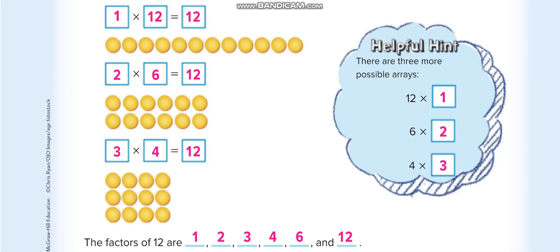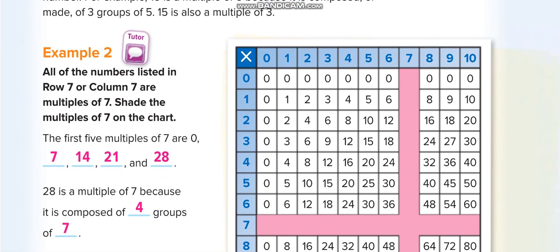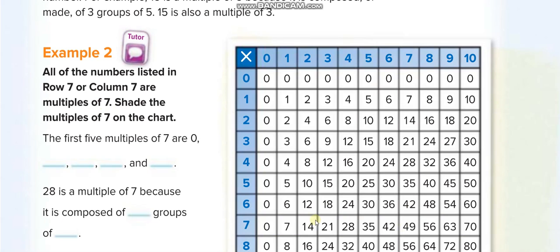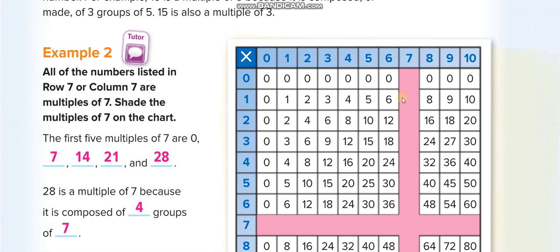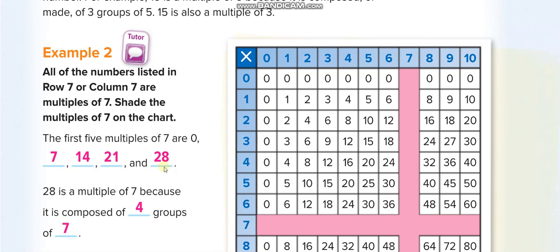Now the second topic: multiples. Multiples are very simple — they start with 0, like the multiplication table of that number. For multiples of 7: starting with 0, then 7, 14, 21, 28 — they just ask for the first 5, so up to 28, which is 4 groups of 7.